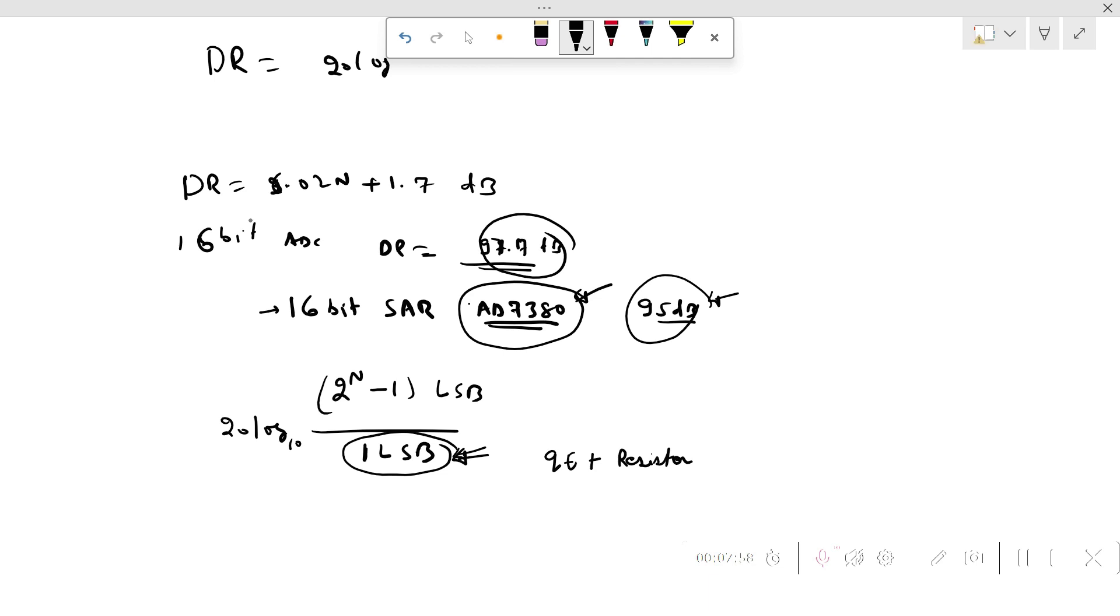Now, how can we increase this dynamic range? There are many ways to increase the dynamic range. One is oversampling—we can increase it by oversampling. We can also increase it by keeping two ADCs, ADC1 and ADC2, in parallel and averaging it out; that will also increase the dynamic range of the ADC. We can also put a PGA, programmable gain amplifier, followed by oversampling; that will also increase the dynamic range of the ADC. We'll try to study all these methods to increase the DR in the upcoming lecture.